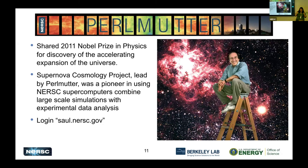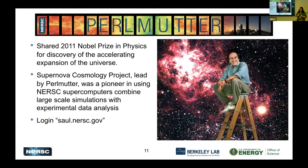Perlmutter the machine is used heavily for that combination of simulation and data analysis. One stipulation Perlmutter had was that his last name was too long, so he required users to also be able to log in at saul.nersc.gov in addition to perlmutter.nersc.gov. That's much easier — everyone can spell Saul, not everyone can spell Perlmutter.